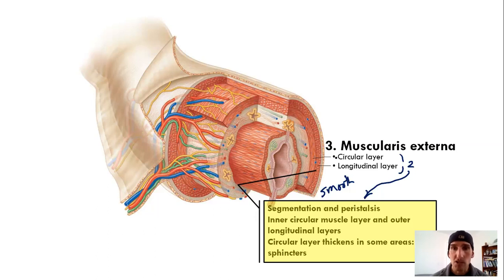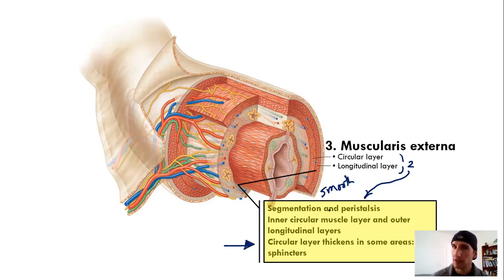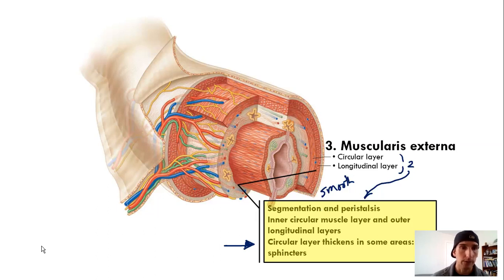That circular layer at key points in your alimentary canal thickens and forms sphincters. You have a bunch of sphincters around your body controlling the entry and exit of food contents — chyme, bolus, et cetera — into and out of organs.